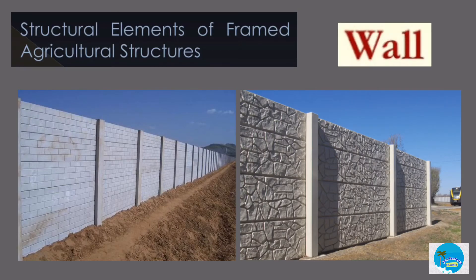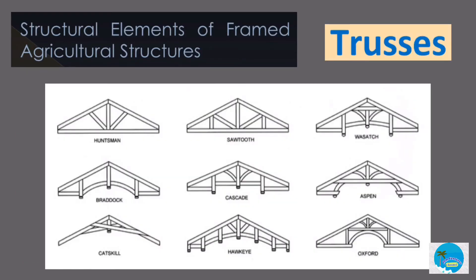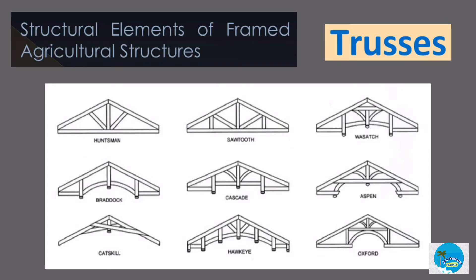Wall: a member that makes a boundary and provides shelter and security. Truss: an assemblage of straight members connected at their ends by flexible connections and subjected to loads and reactions only at the joints or their connections. Foundation: the lowest load-bearing member, usually below ground level.